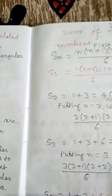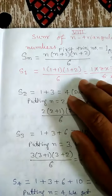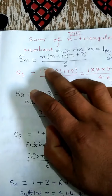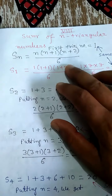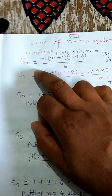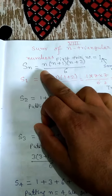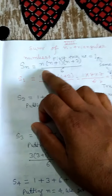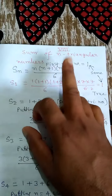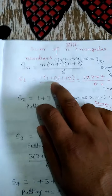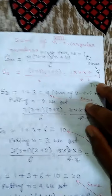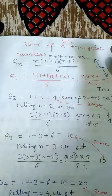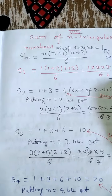Now let's find the sum of n triangular numbers. It will be calculated with the help of the formula Sn equals n(n+1)(n+2)/6. We can put either n or m here. When we put 1, it means the sum of the first triangular number, which is the triangular number itself — that is 1. When we put 1 in place of n, we get 1 into 1 plus 1 into 1 plus 2 by 6, which gives 1. As we know, the first triangular number is 1. With the help of the formula, I also obtained 1, so this formula is true.